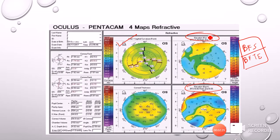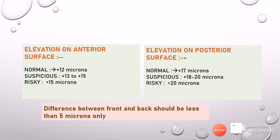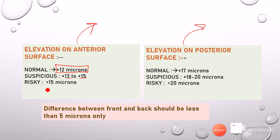On the elevation map, blue colors mean the cornea is flatter compared to the reference, while red areas mean the cornea is steeper compared to the reference. The elevation on the anterior elevation map should normally be about plus 12. When it becomes plus 13 to plus 15, it is suspicious, and more than 15 is definitely risky. On the posterior elevation map, 17 is normal, up to 20 is more risky, and anything in between is suspicious.